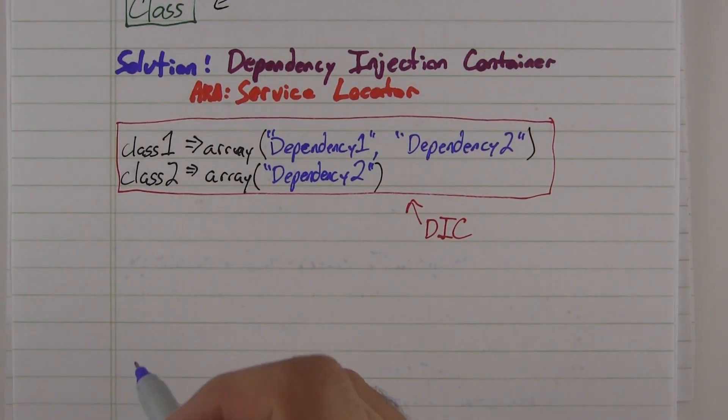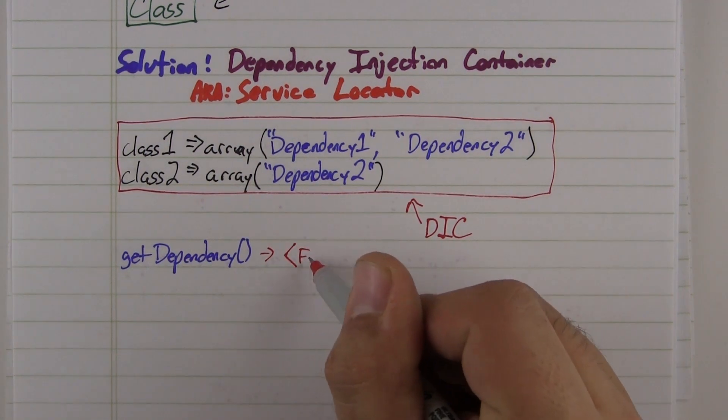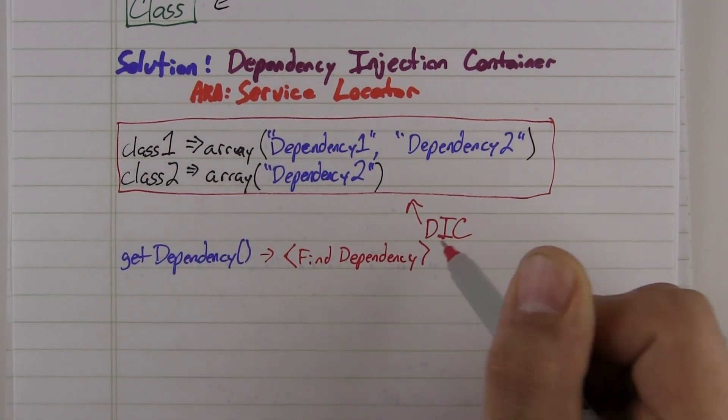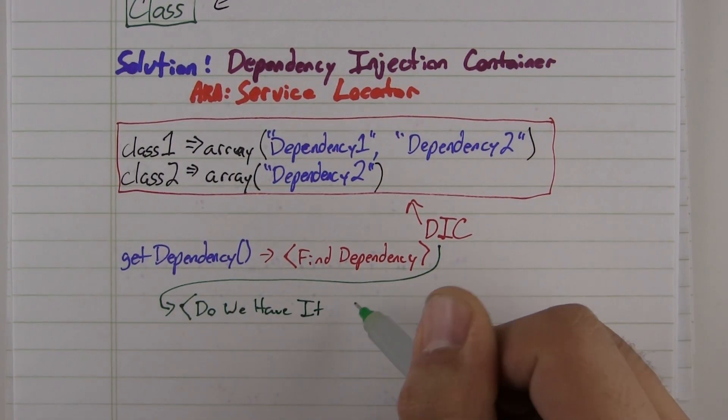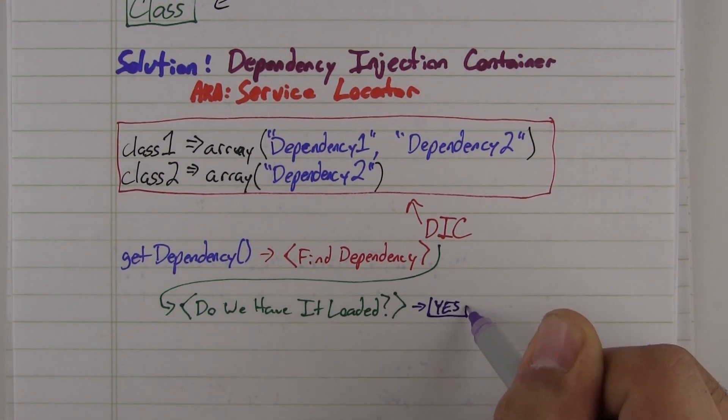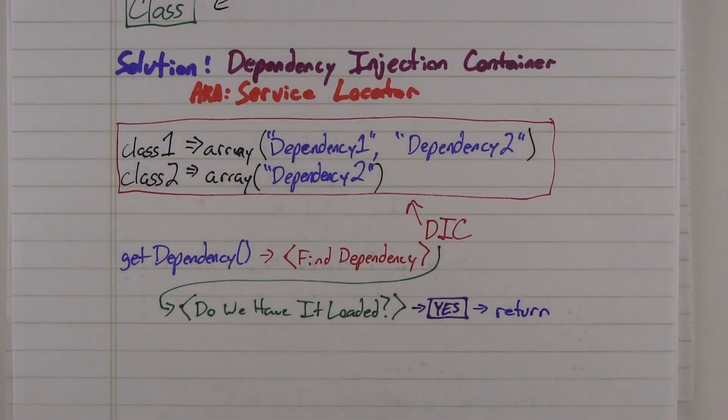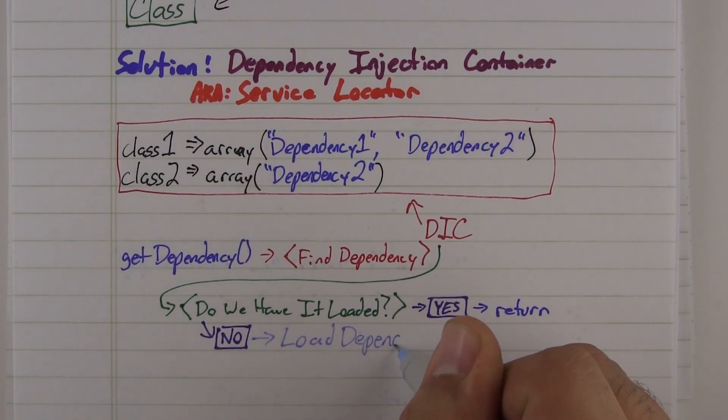So every time you ask for a dependency, the map will figure out which dependency to use, and then the container will check to see if it created one of those dependencies already. If it has, it'll just use that one. Otherwise, it'll create the dependency, store it, and then return it.